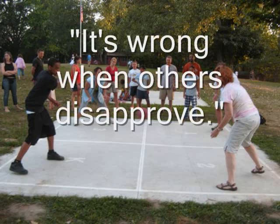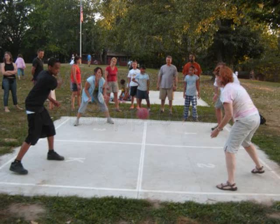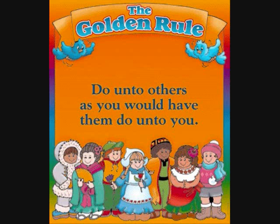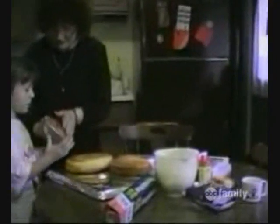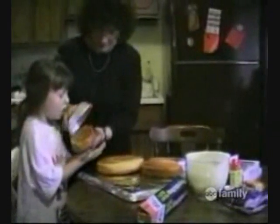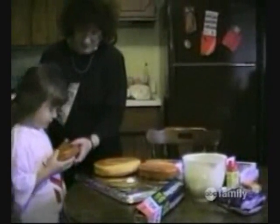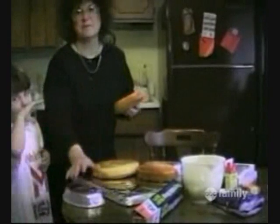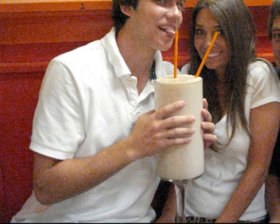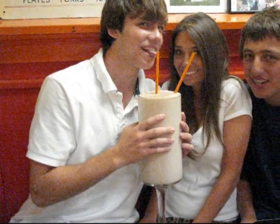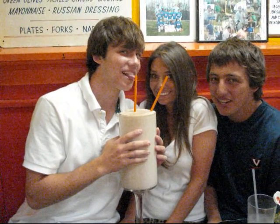Stage 3: Good Boy/Girl. Right and wrong are determined by approval or disapproval by their peers. They are aware of society's perceived roles and the benefits of fulfilling them. The golden rule becomes central to their reasoning. Actions are evaluated in terms of intentions — they meant well. This perception works well in relationships with family members or close friends, where there exists the opportunity to really understand the needs of another person.